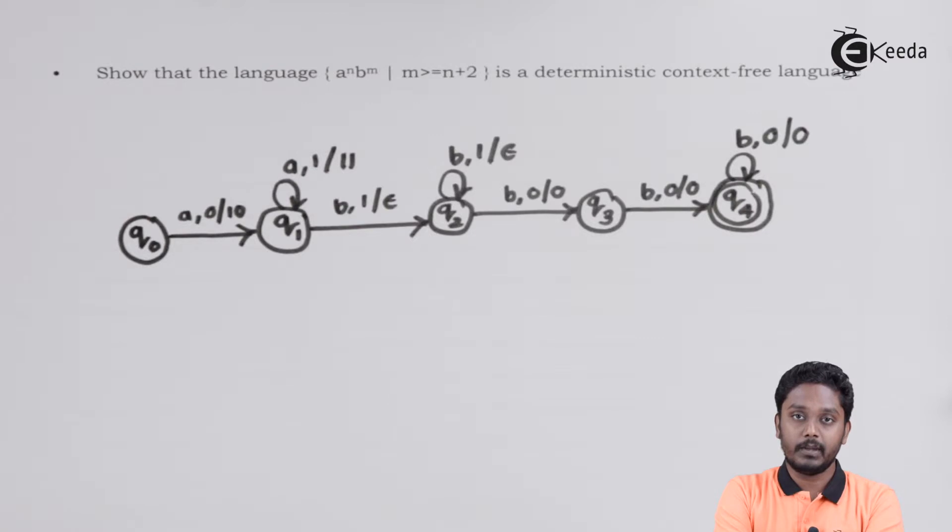So we have constructed a DPDA. This is actually a DPDA, because we don't have multiple transition on the same input, as well as we don't have any epsilon transition over here. We can say that this particular DPDA is possible, and hence this particular language is deterministic.